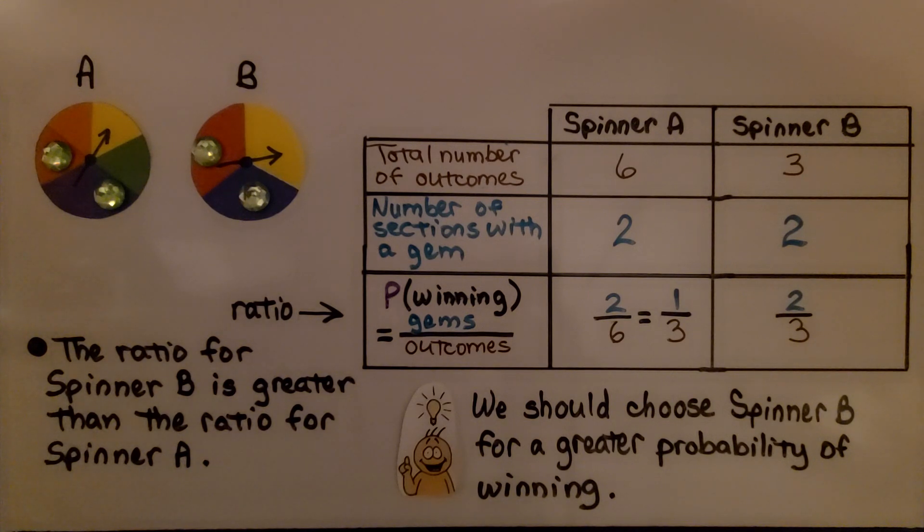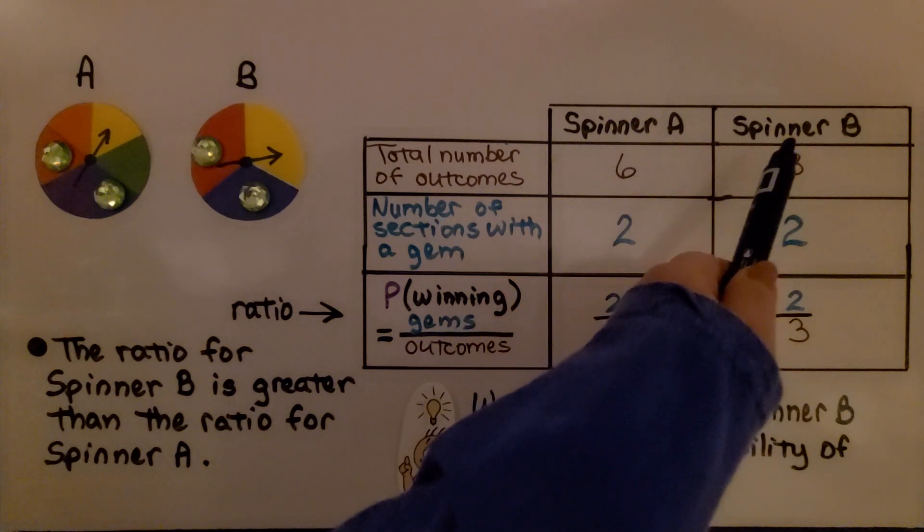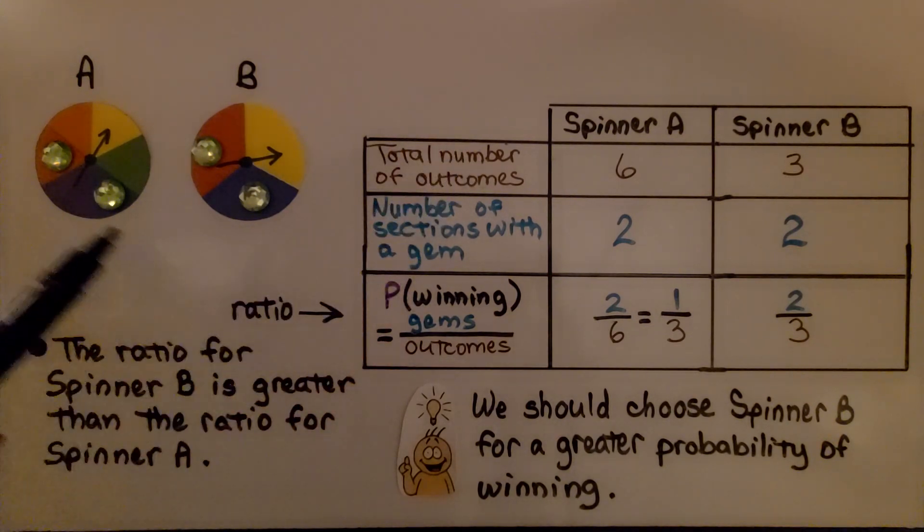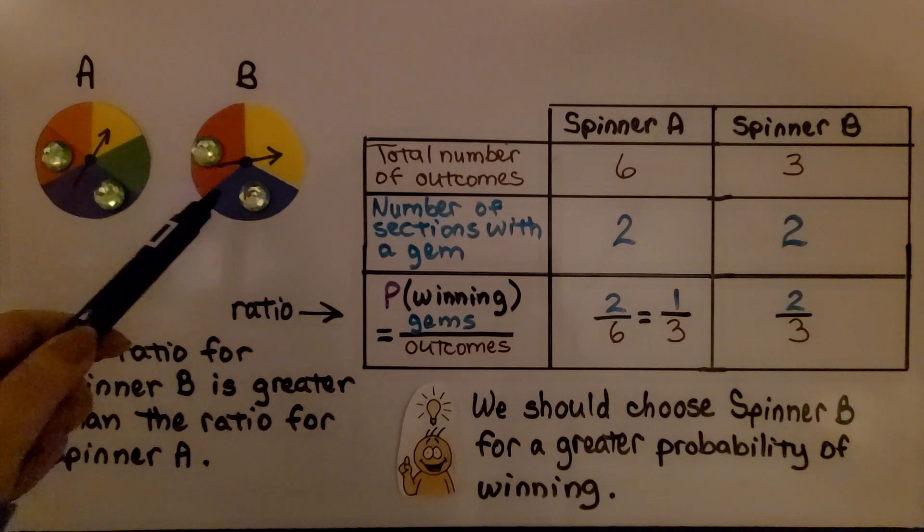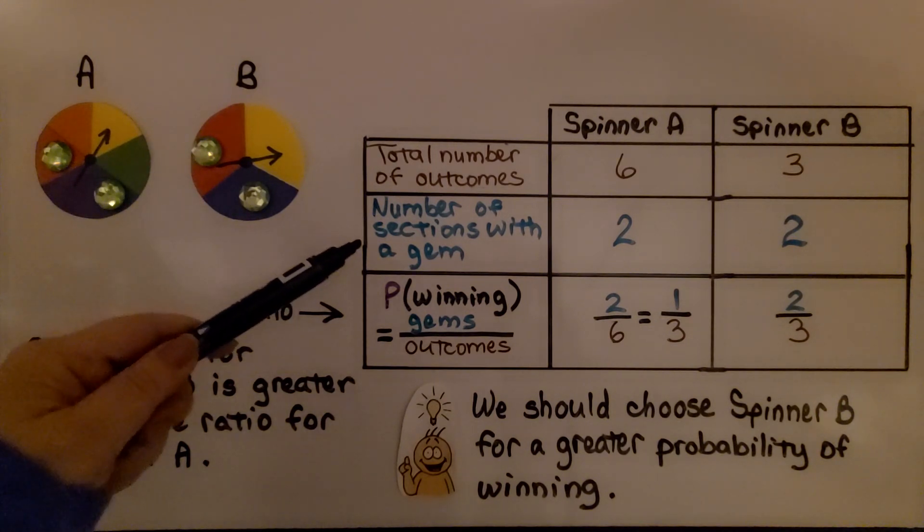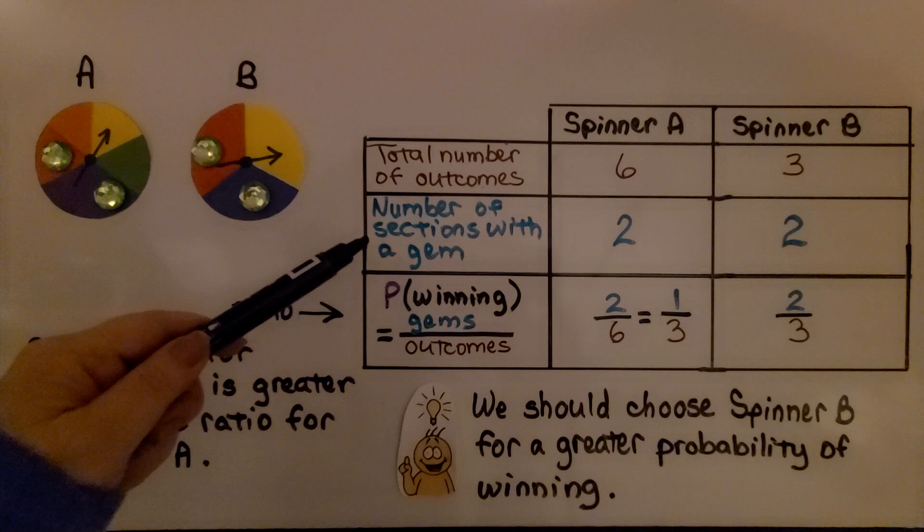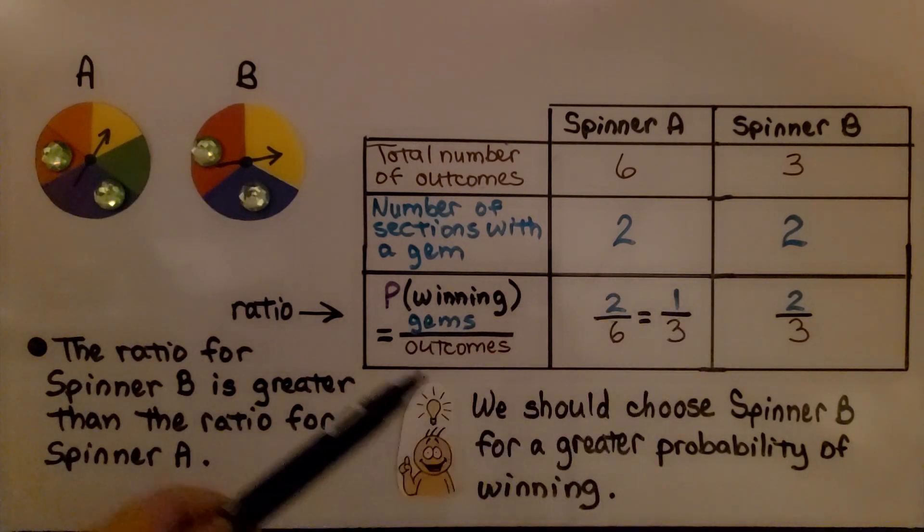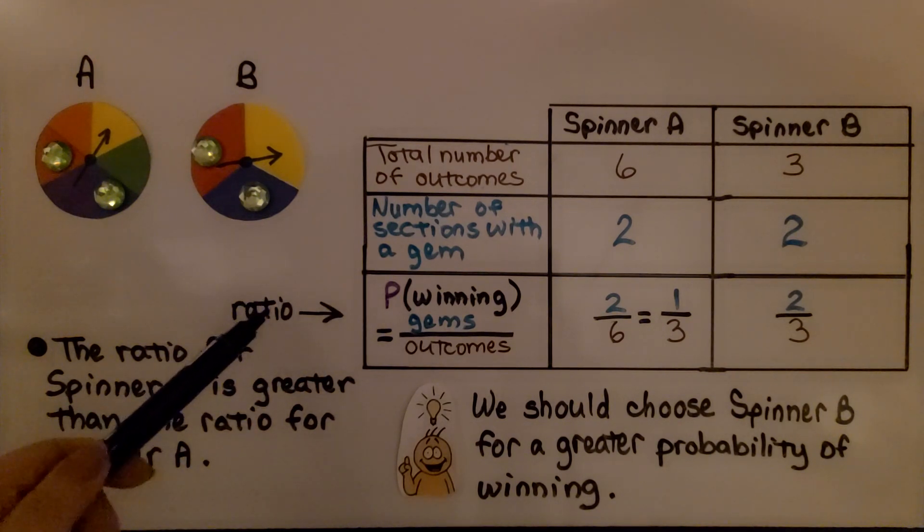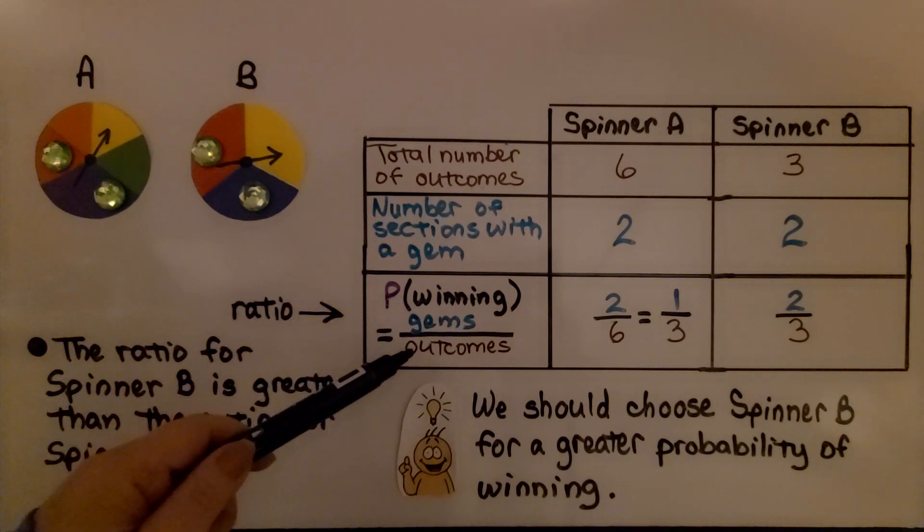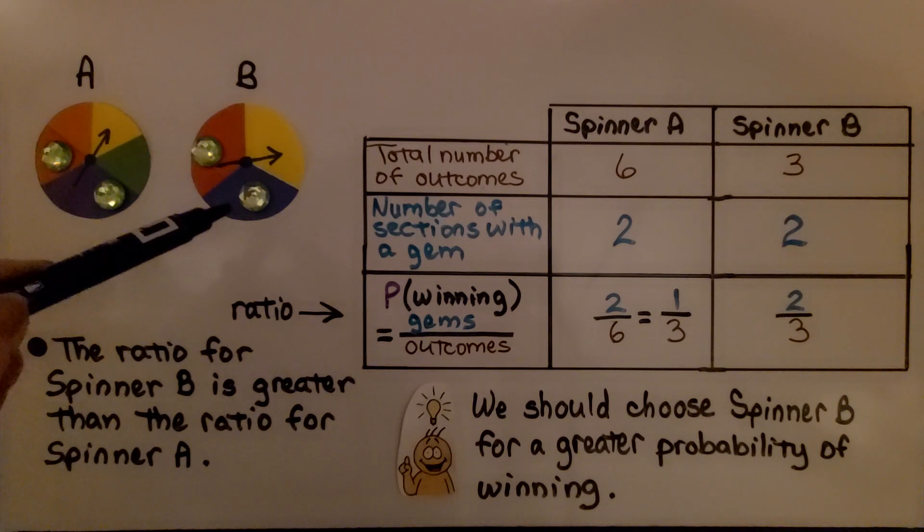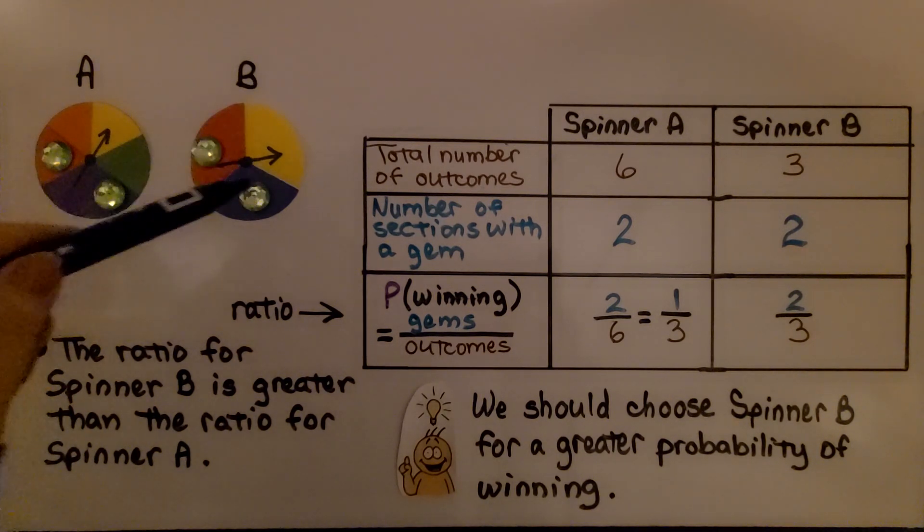So here we have a table, and it's showing for spinner A and spinner B, we have the total number of outcomes, that's the number of sections. Spinner A has six sections, spinner B has three sections. And it shows the number of sections with a gem. Spinner A has two sections, and spinner B has two sections. And the probability of winning as a ratio, as the gems to the outcomes. For spinner A, we have two gems to six possible outcomes. And for spinner B, we have two gems to three possible outcomes.